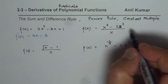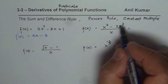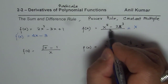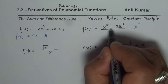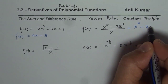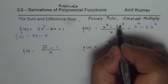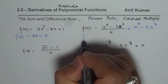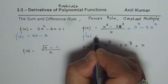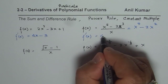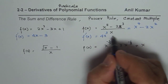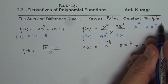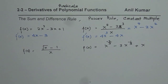For the second function, it is a good idea to rewrite the expression. We can write x⁵/x as x⁴, and 2x³/x as 2x². Once we rewrite it like this, the derivative of x⁴ is 4x³, and the derivative of 2x² is 4x. So the derivative is 4x³ - 4x.